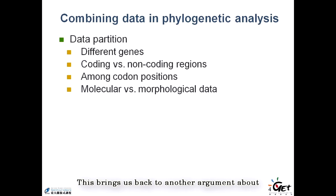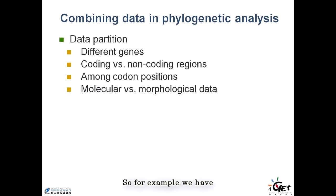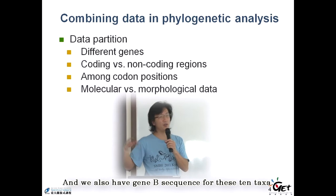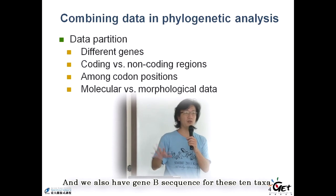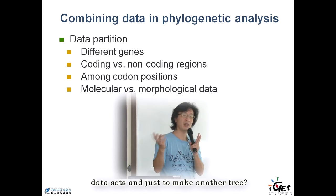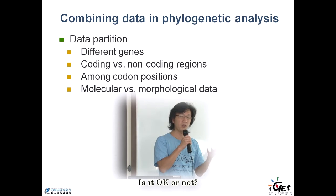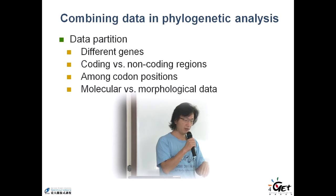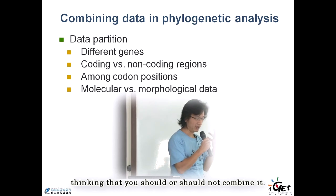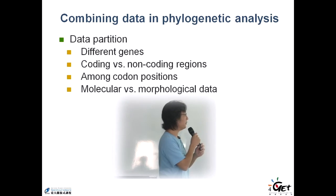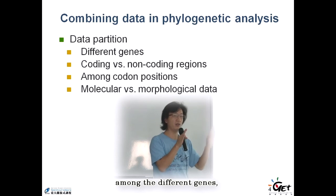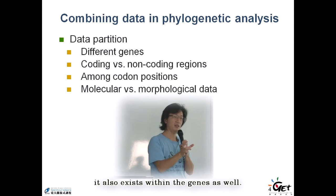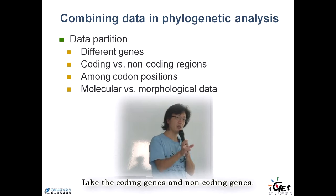This brings back another argument about why we deal with data partitions. For example, we have gene A for 10 taxa and gene B sequences for those same taxa. Can we combine those two datasets to make another tree? There are some principles and theoretical thinking about whether you should or should not combine them. These data partitions exist not only among different genes, but also within genes — like coding genes and non-coding genes — and even among different codon positions.